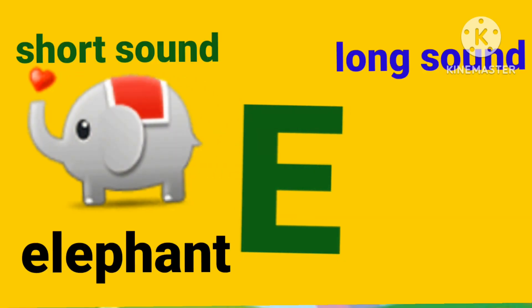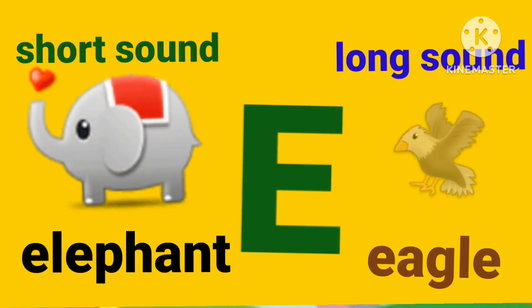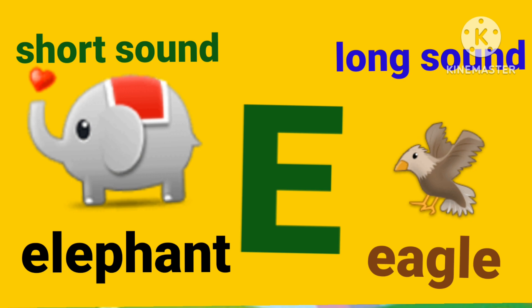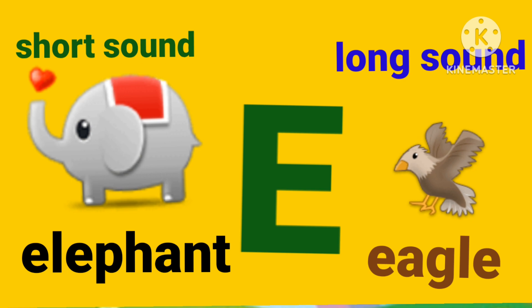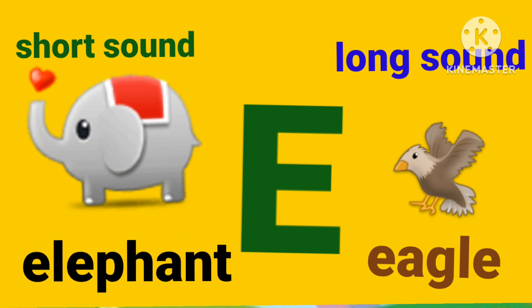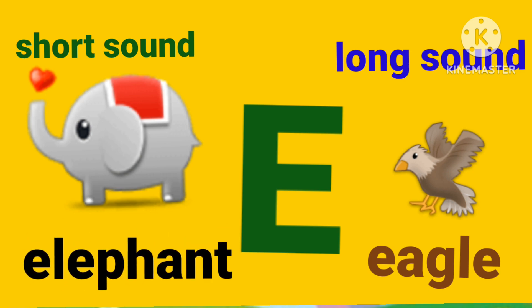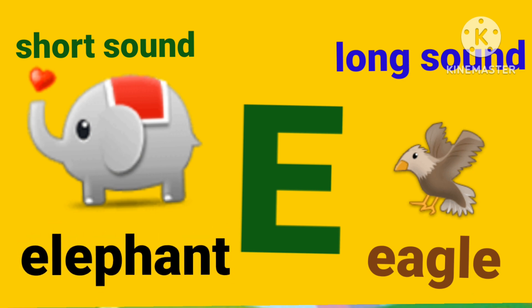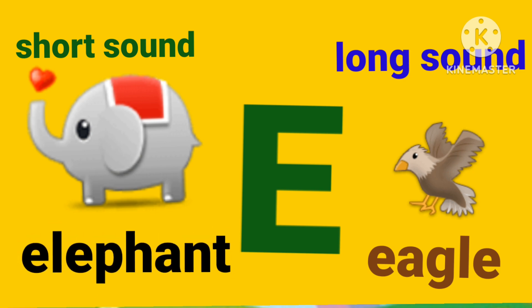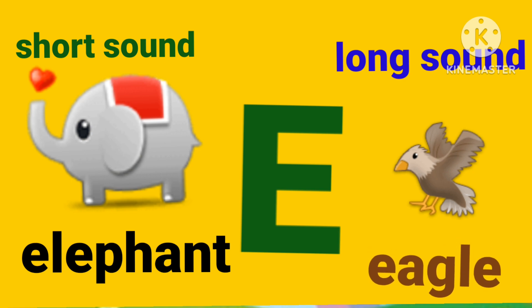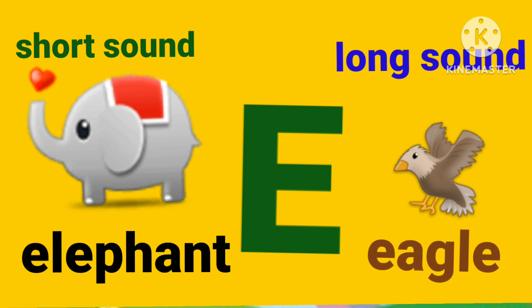And long sound: 'A, A' as in angel. Letter E — letter E is a vowel and it has two sounds. Short sound: 'eh, eh' as in elephant. And long sound: 'E, E' as in eagle.